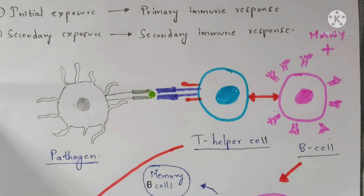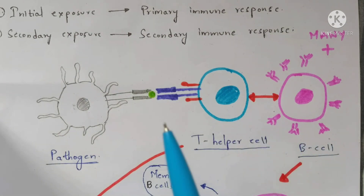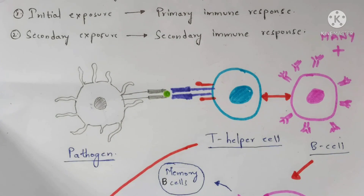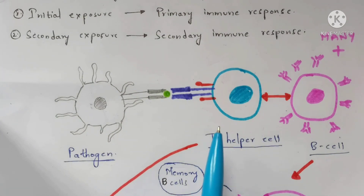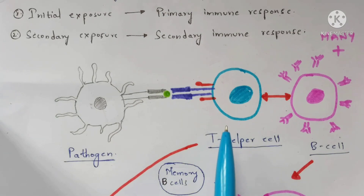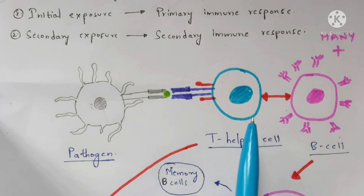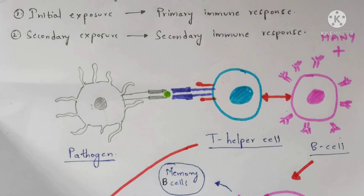Memory cells are of two types: memory B cells and memory T cells. Now let's understand how memory T cells are generated. The T helper cell will get proliferated into a naive T cell once the immune response process is done. This naive T cell is completely immature — it doesn't have any information in it and doesn't produce any response. Its function is like a contract laborer who won't do any work until assigned a task.